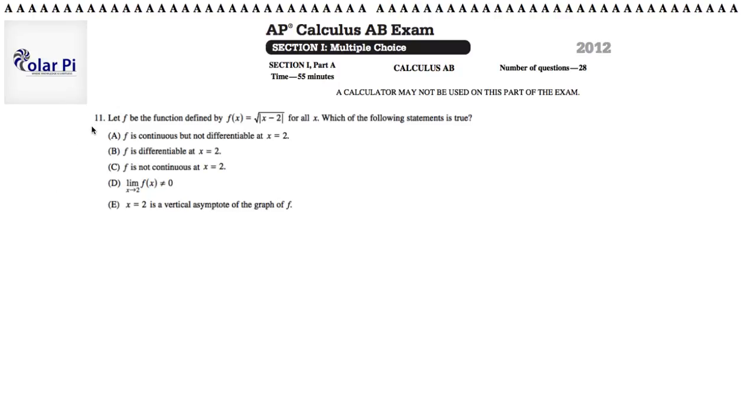Hi, welcome. In this video, I'm going to go through problem 11. In problem 11, we have that f is a function defined by f of x equals root absolute value of x minus 2 for all x. Which of the following statements is true? And A says f is continuous but not differentiable at x equals 2. Correct.